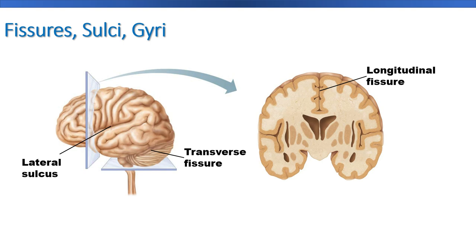Here's a transverse fissure dividing the cerebrum from the cerebellum. We also have a lateral sulcus — not as deep as a fissure — and the lateral sulcus is between a couple of lobes of the brain. There's actually another lobe we can visualize right in there.